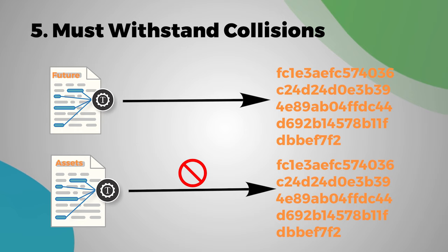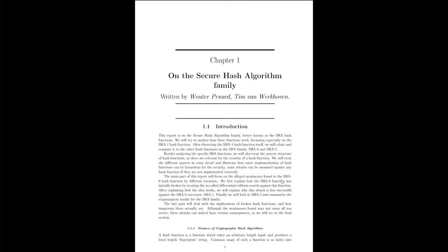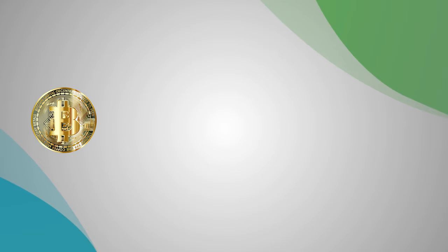Collisions should not be possible. This is the foundation of what we're going to be discussing about blockchain. If you'd like to learn exactly about how the SHA-256 algorithm works, then you can check it out here. The paper is called 'On the Secure Hash Algorithm Family.' It is actually Chapter 1 of the book 'Cryptography in Context,' written by Wouter Penard and Tim van Werkhoven. I have also attached a link to this chapter in the video description.